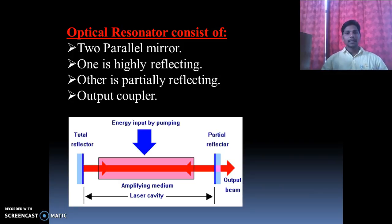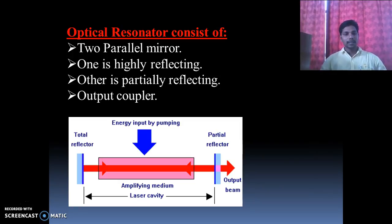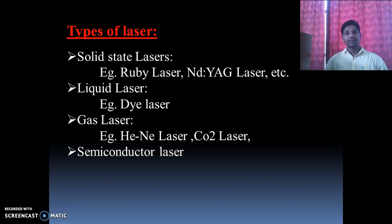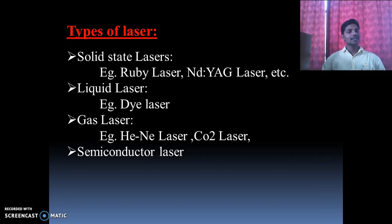The optical resonator uses two mirrors: one highly reflecting and the other partially reflecting, which acts as the output coupler. There are different types of lasers: solid laser, liquid laser, gas laser, and semiconductor laser.